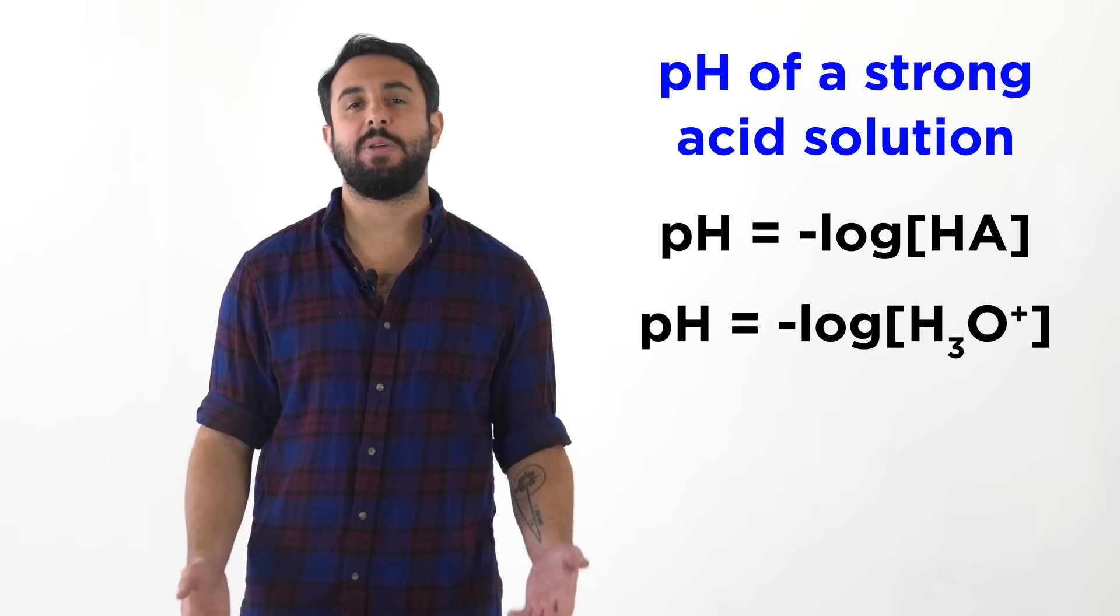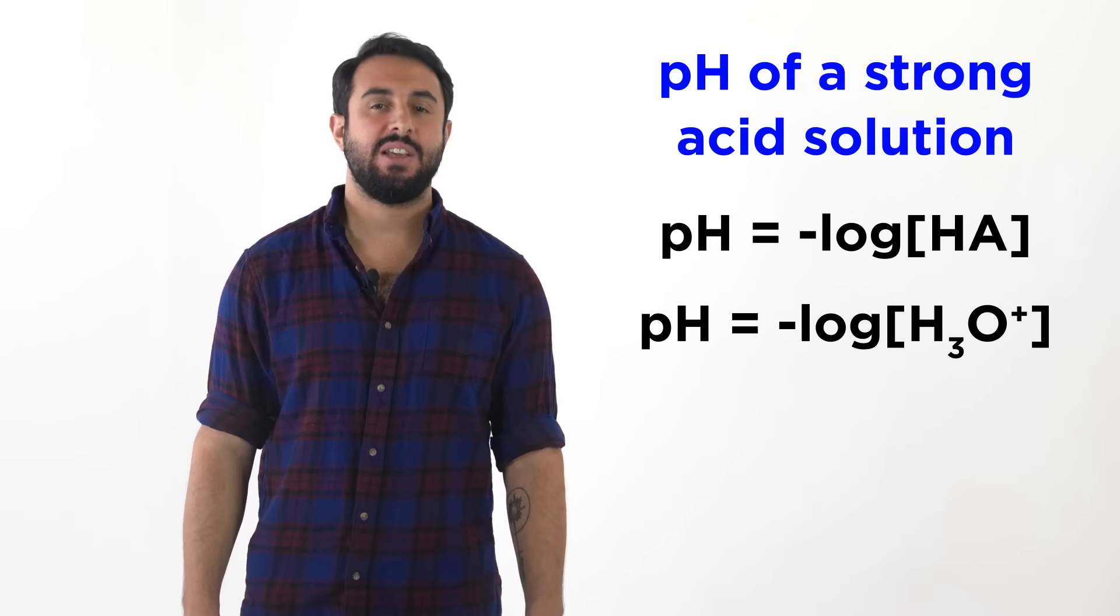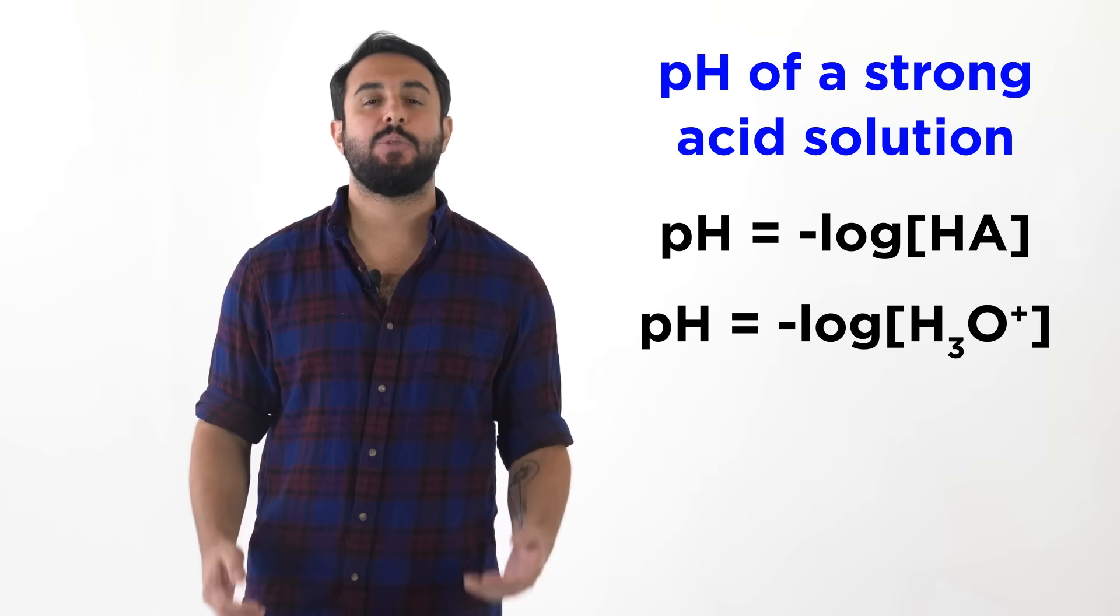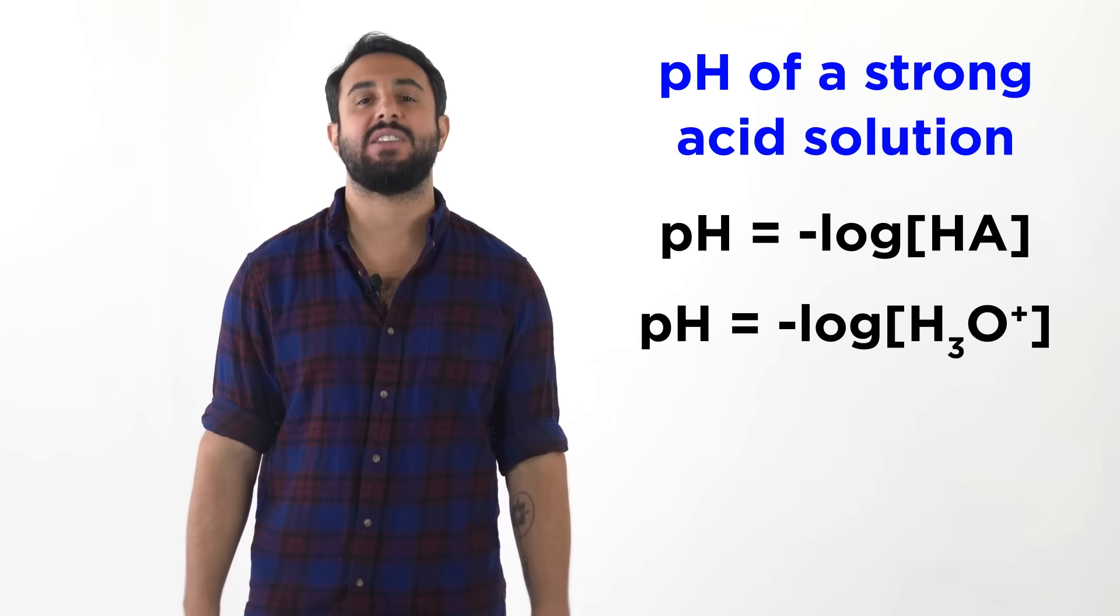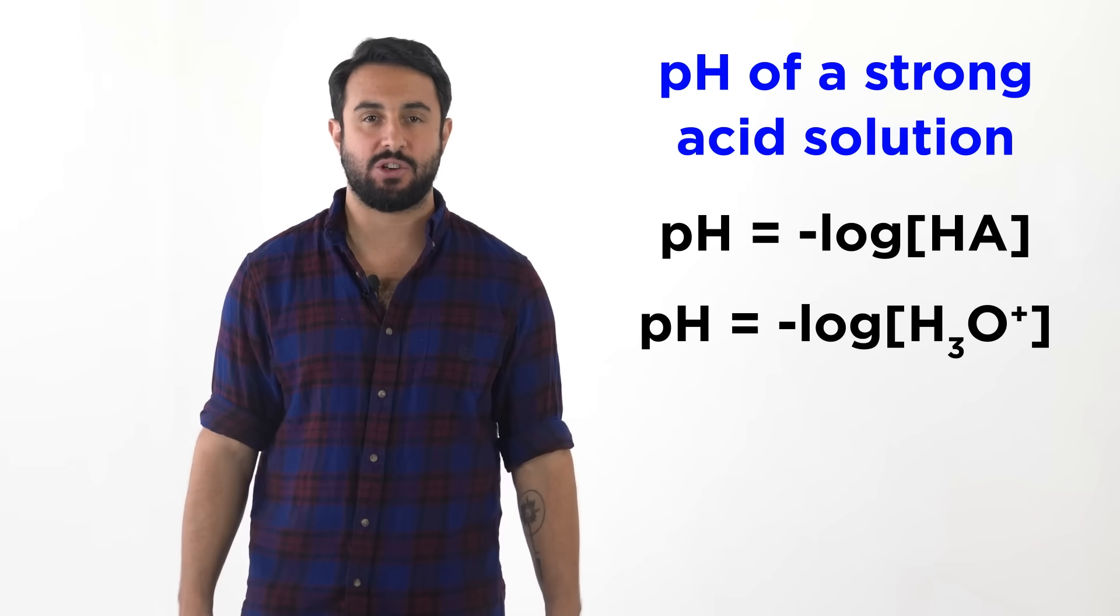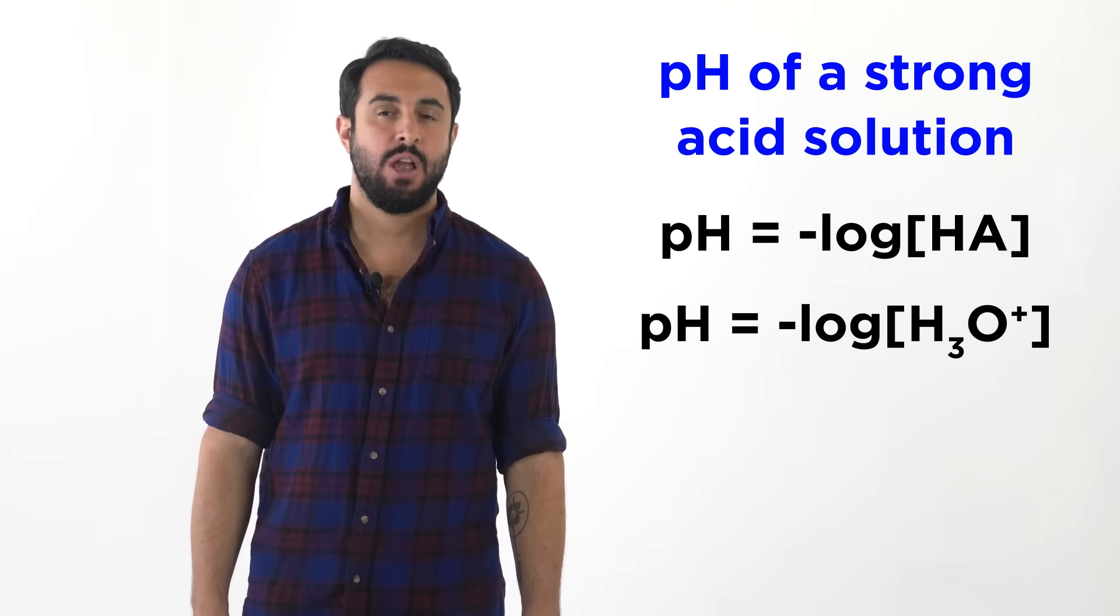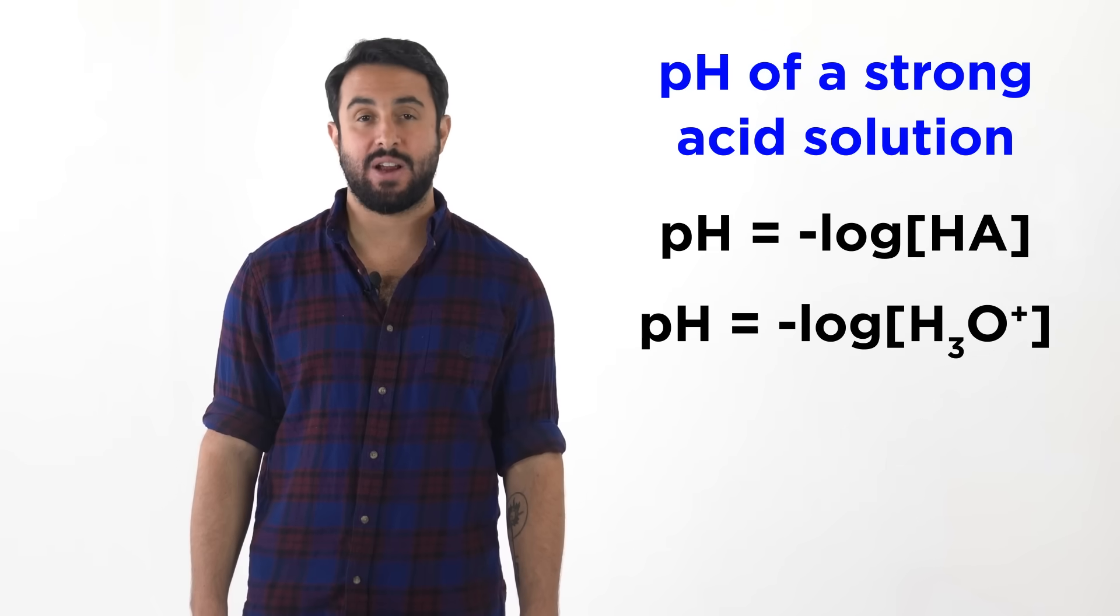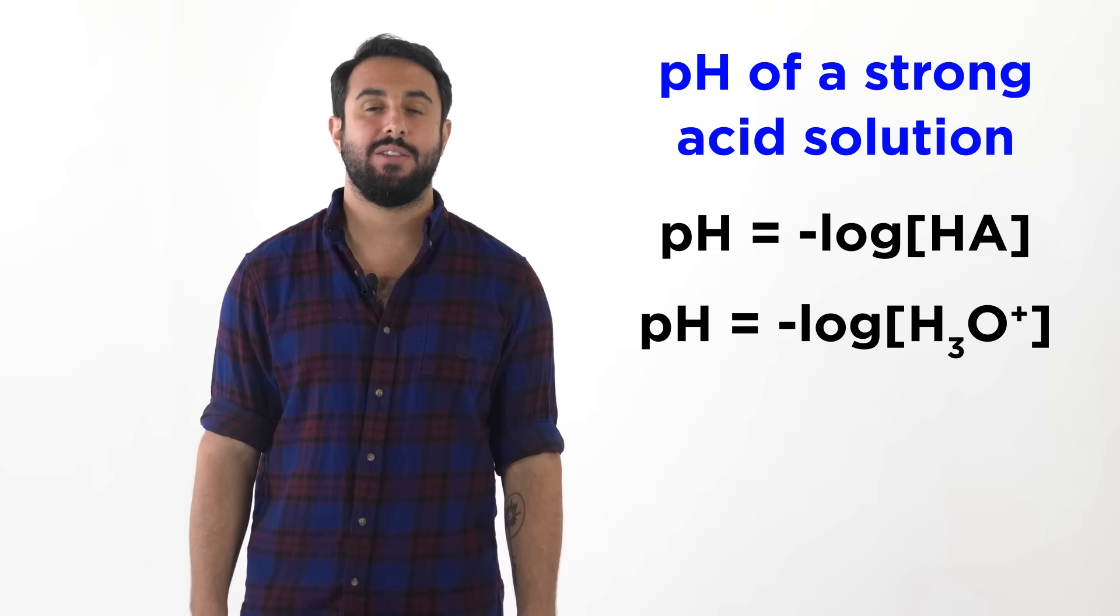As we can see, calculating the pH of strong acid solutions is extremely straightforward. We just find the acid concentration, and provided it is not so small as to be negligible, we consider that to be the hydronium concentration, and take the negative log. For weak acids, this will be more complicated, so let's check that out next. Professor Dave for Chegg, see you next time.